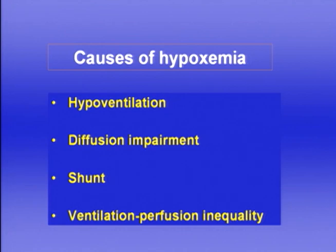Now let's look at abnormal PO₂ values and the four causes of hypoxemia: hypoventilation, diffusion impairment, shunt, and ventilation-perfusion inequality. Let's start with hypoventilation.